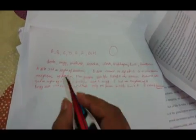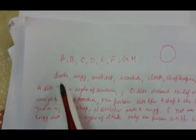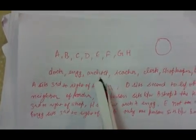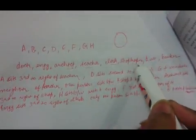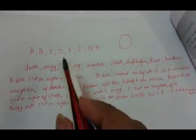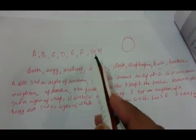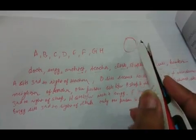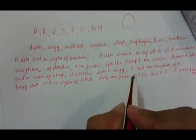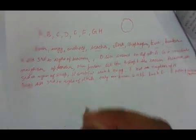We have a question in which eight people are sitting around a circular table, all facing the center, each having a different profession: doctor, engineer, architect, teacher, clerk, shopkeeper, businessman, and banker. We have eight different people sitting around a circle, and we have these statements to arrange them in a particular order.